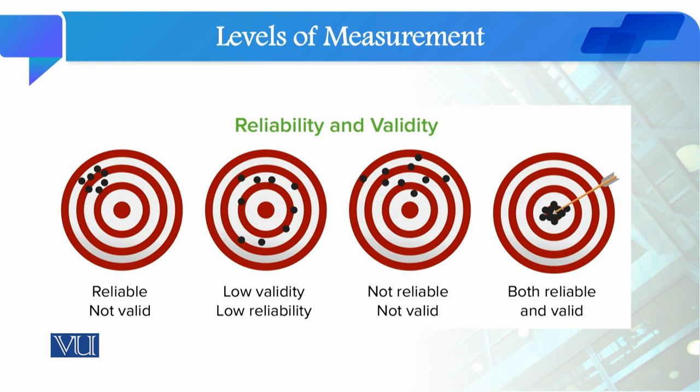Reliability and validity as a whole — you can have a reliable scale but it may not be valid. Reliability is about consistency, but validity is about whether you are truly measuring what you intend to measure.